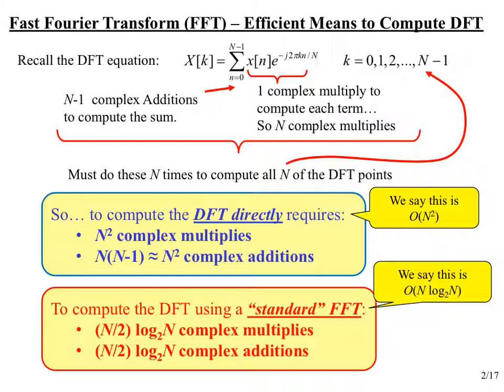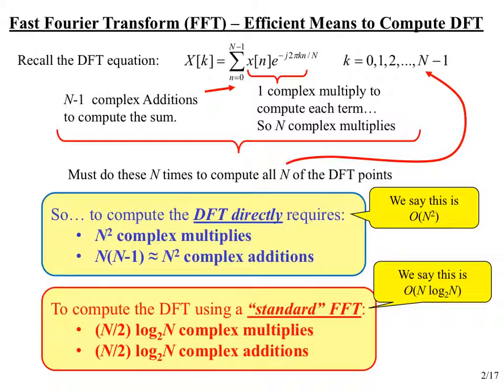Just to set the stage, let's look at how much computation one would have to do to compute the DFT in the obvious direct way. We have written out our DFT to compute for k equal from 0 out to N minus 1, so we need to compute N of those numbers. We should look at however many computations we have to do in this summation — we will have to do N times that.